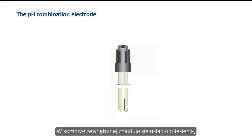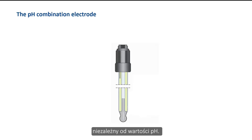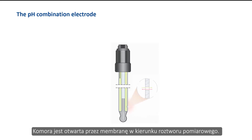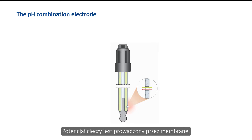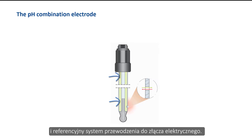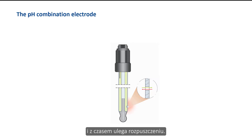The outer chamber contains the reference system, which provides a stable reference potential independent of the pH value. The chamber is opened through the diaphragm towards the measuring solution. The liquid potential is led through the diaphragm, the reference electrolyte, and the reference conduction system to the electrical connection. The reference electrolyte consists of saturated potassium chloride and dissolves over time, which is why combination electrodes should be regarded as consumables.